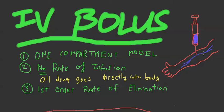You start off with a high plasma level. Just like infusion, we have to make a couple assumptions, because we're applying this in the classroom. The number one assumption is that it's a one-compartment model — same thing as IV infusion. For this test, we're only going to work on one-compartment models; multiple compartments will be for the second test. The second assumption is that there's no rate of infusion, because it's a bolus shot — all drug goes directly into the body.